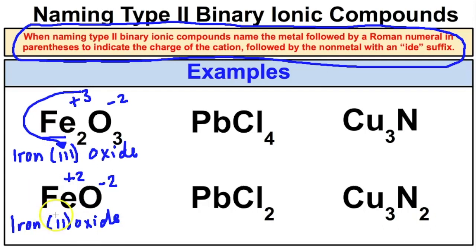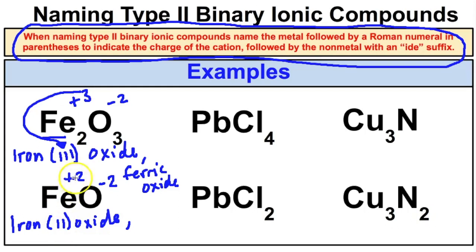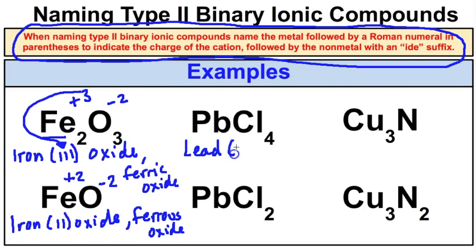Using the common name, iron(III) oxide — the iron ion with the higher charge — is called ferric oxide. Looking at the next examples, we have lead(IV) chloride and lead(II) chloride.